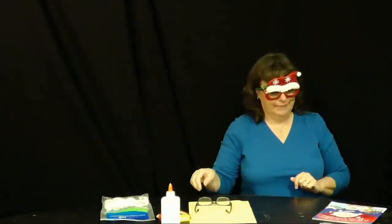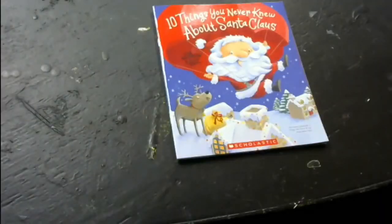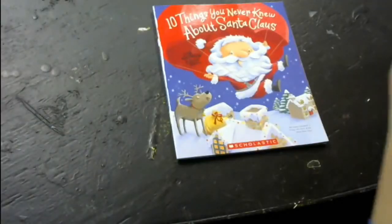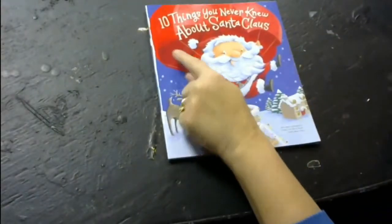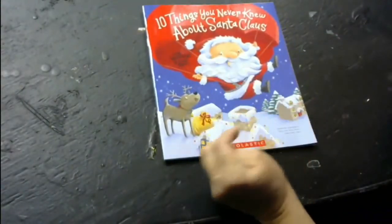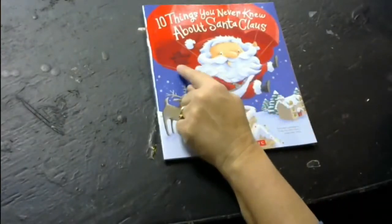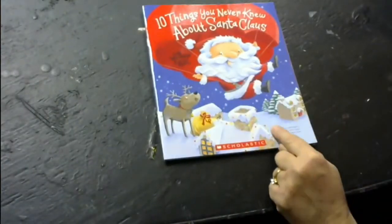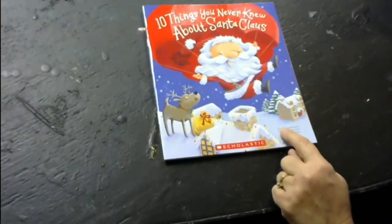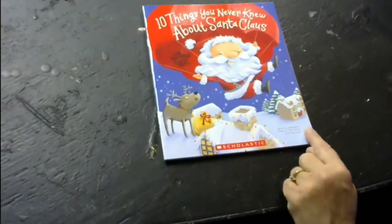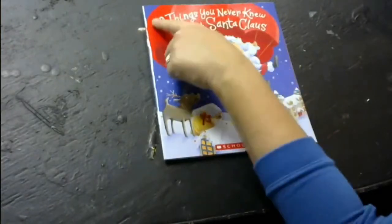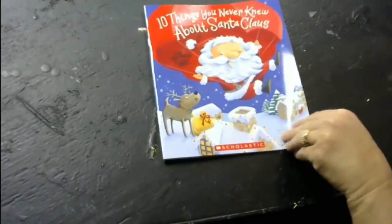We're going to start off with our book, which is called Ten Things You Never Knew About Santa Claus. Let's see. What could it be? Do you guys have any ideas? This book was written by Giles Paley Phillips and it was illustrated, so the person that drew the pictures, is Rowan Martin. This book was previously published as Things You Never Knew About Santa Claus, and now they're just calling it Ten Things You Never Knew About Santa Claus.